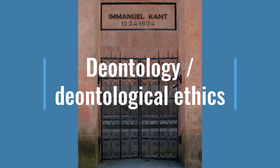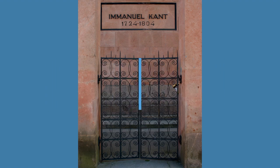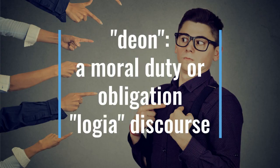Immanuel Kant was a German philosopher of the 18th century. He invented a school of thought called critical philosophy, and in particular deontology or deontological ethics. The etymology — the origins of the word — comes from two Greek concepts: 'deon,' meaning moral duty or obligation, and 'logia,' from discourse, words, the study of something. So deontology is the study of moral duties and obligations.